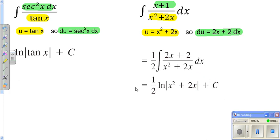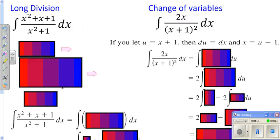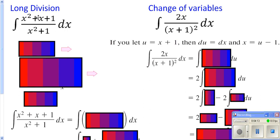You can go ahead and differentiate all of our answers to see if you get your original problem to check your work. Some problems are not quite as easy. You'll notice the top here is not the derivative of the bottom in any shape or form, because when you take the derivative of the bottom you get an x to the first, and you have an x squared on top.